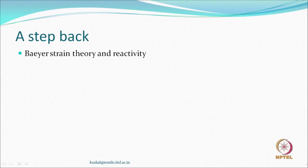In the last lecture, we tried to understand what is the Bayer strain theory - that whenever there are cyclic compounds, a three-membered or four-membered ring, there is a strain on the bonds and because of that, those compounds or those systems become more reactive. We have relatively less stable structures, so they become more reactive because there is a strain, and everything in this world would like to release the strain. One of the ways of releasing strain is just to break the bond whenever the conditions are suitable.